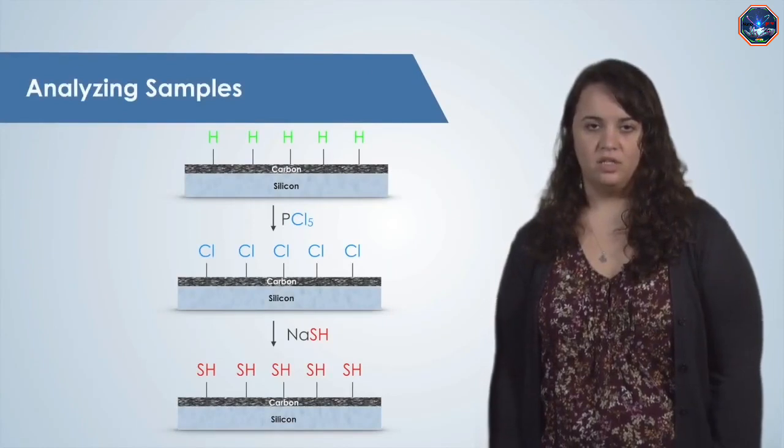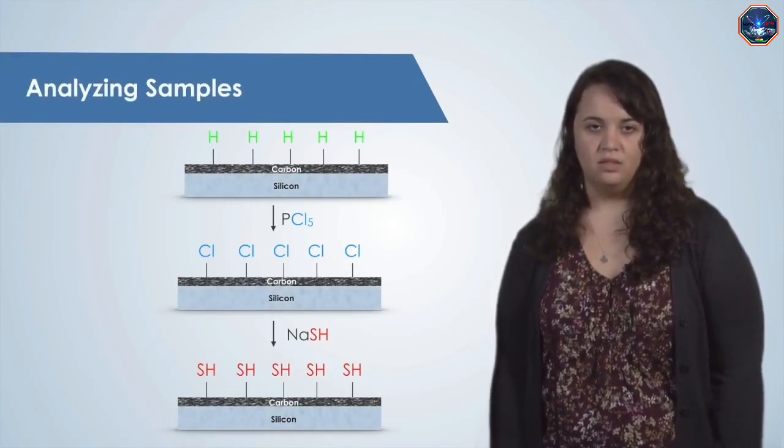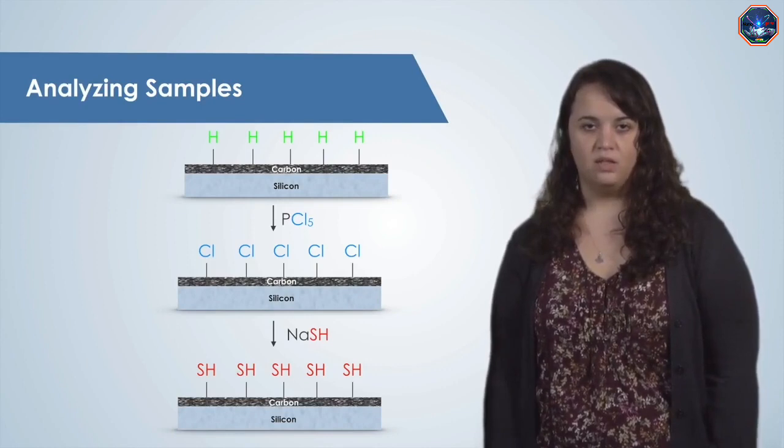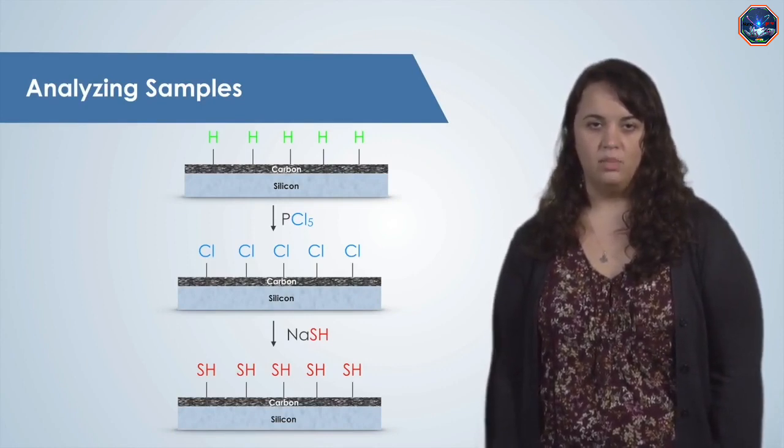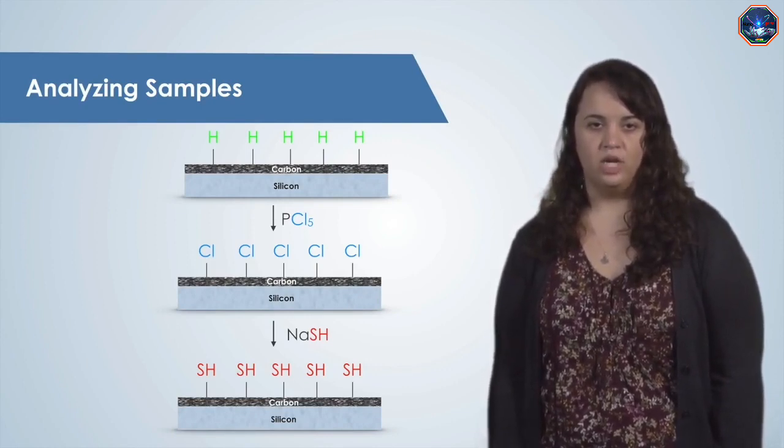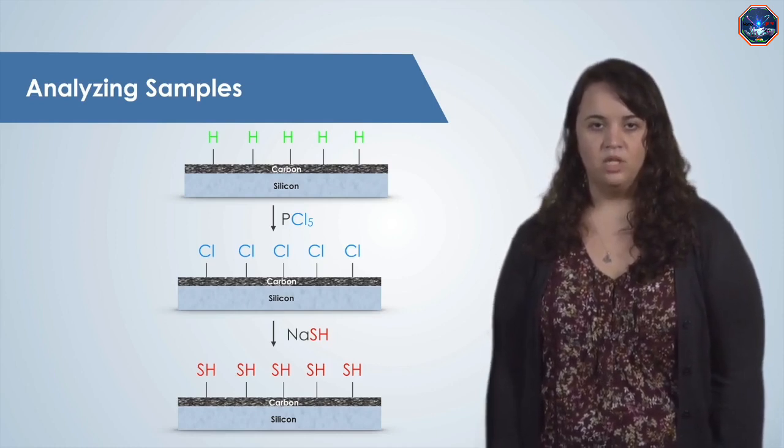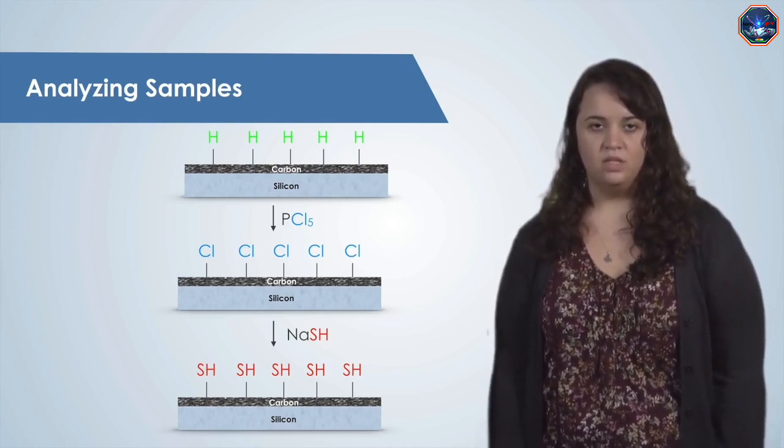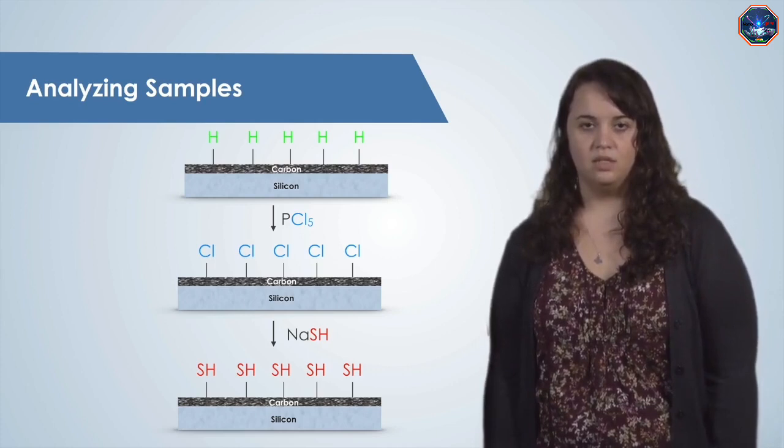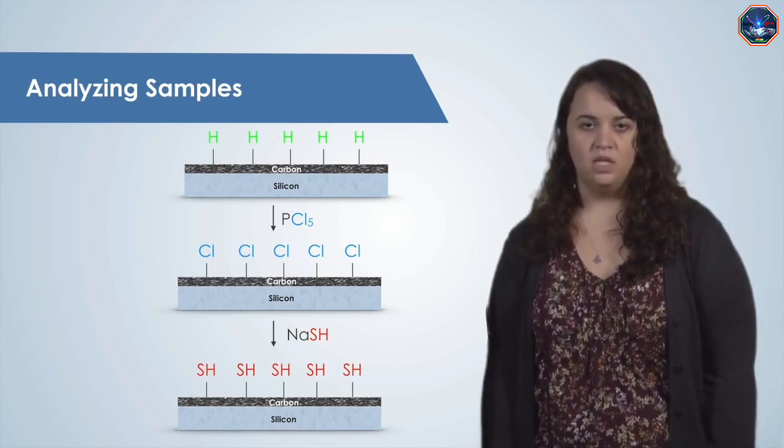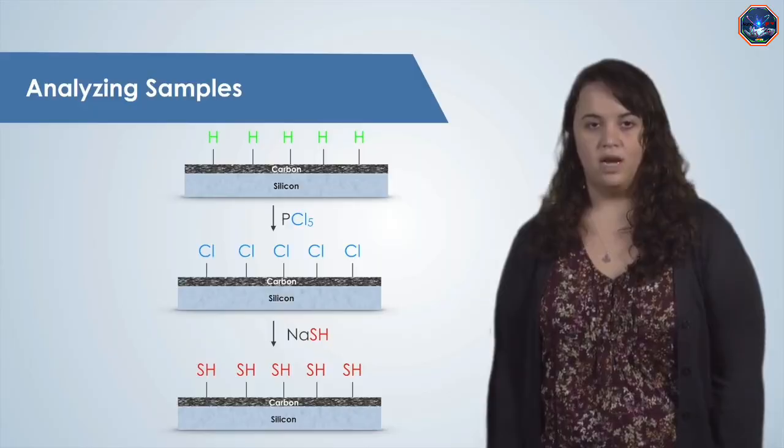Hello Carrie. The samples that we'll be analyzing are carbon films on silicon substrates. Both the silicon and the carbon are conductive, which is ideal for XPS. In my research, I'm trying to modify the top layer of carbon atoms by attaching different atoms, like chlorine and sulfur, to the surface. XPS is an ideal technique to determine if I've been successful. My research is focused on trying to use these surfaces to produce hydrogen gas, a renewable source of energy. My samples are in the lab, so let's go there now.